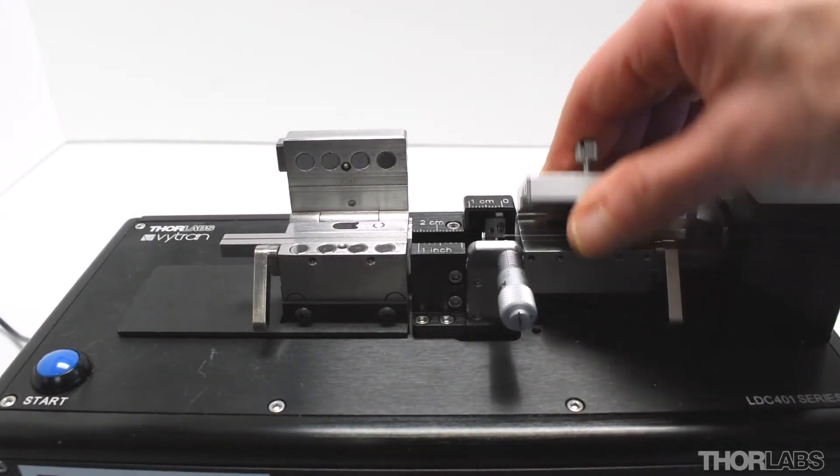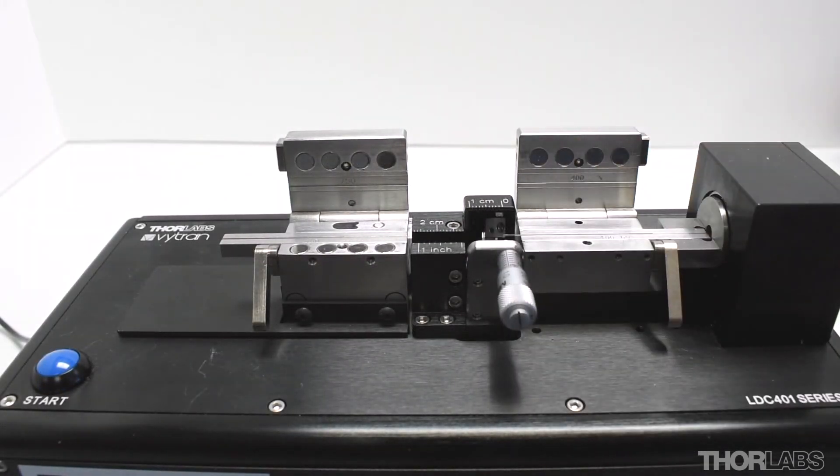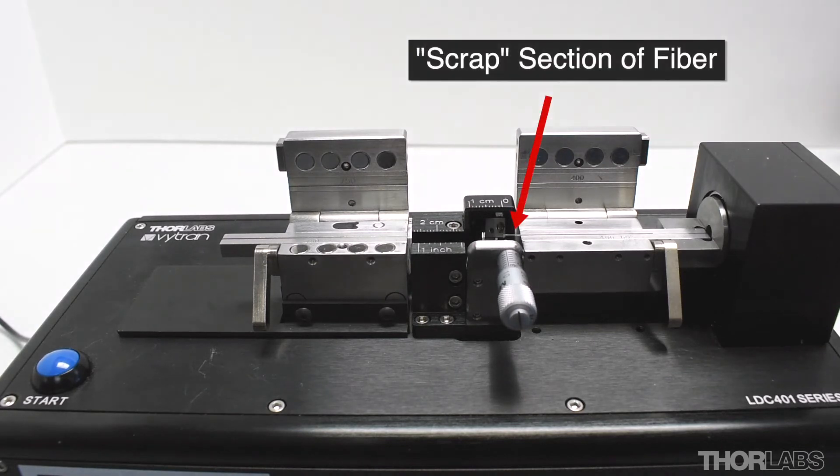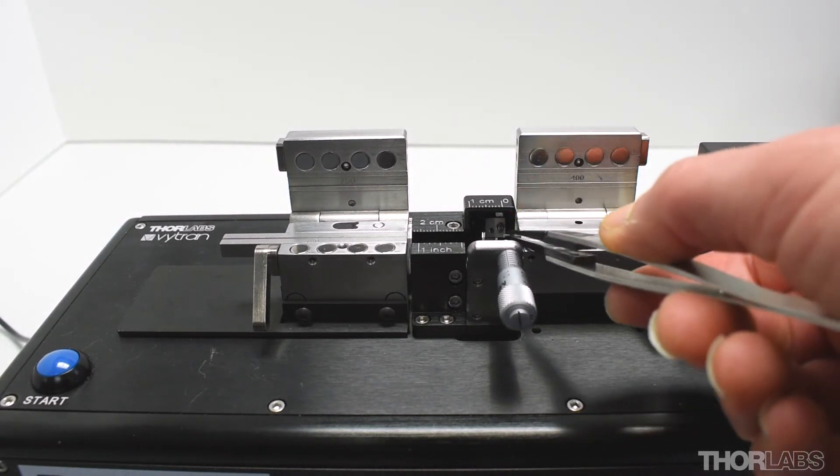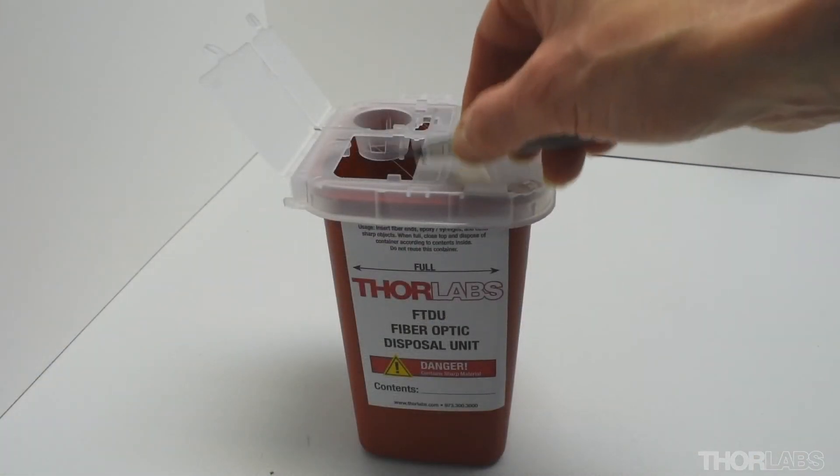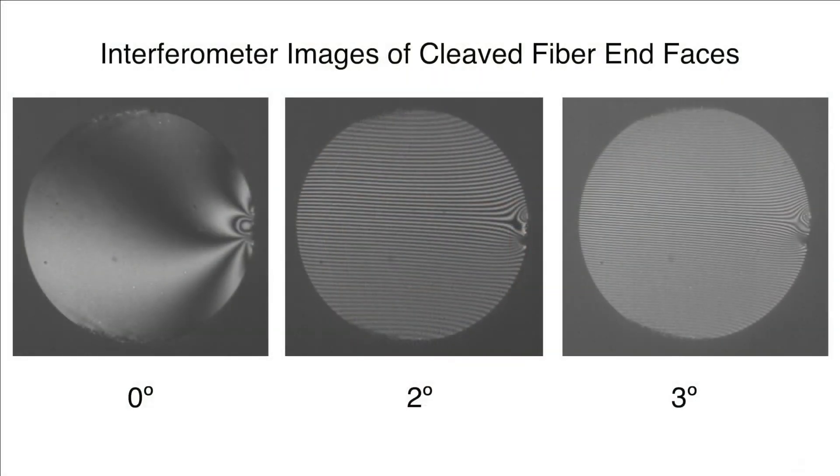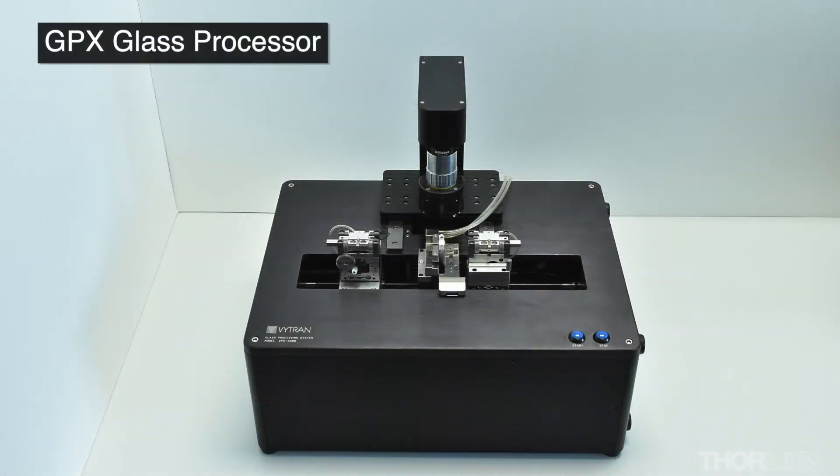The right-hand side fiber holding block, the right scrap section of fiber can then be removed and disposed of appropriately. The cleave angle can be measured using an appropriate device such as an interferometer or a Thorlabs Vitran glass processor such as a GPX.